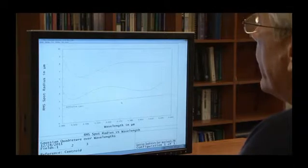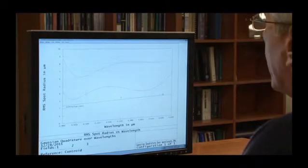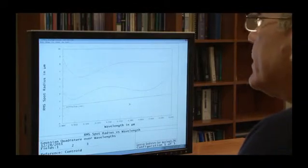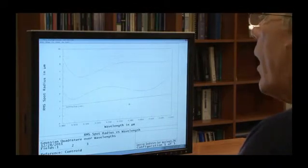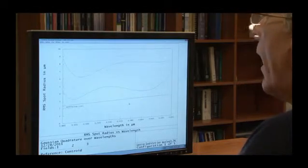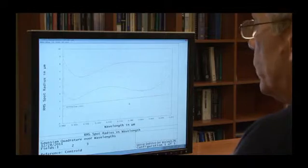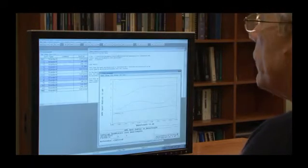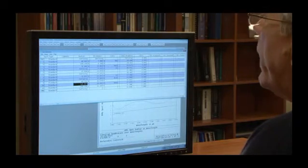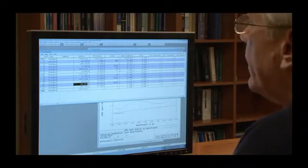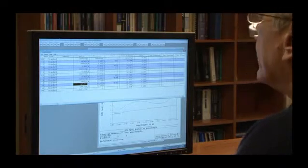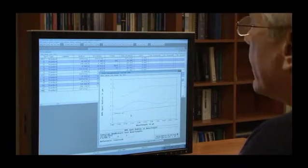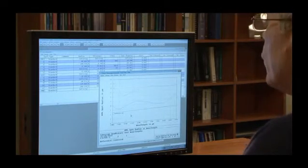So overall, the RMS spot size for this lens over the same wavelength range has improved simply because I changed how I chose my intermediate wavelengths and the weights that I applied to those intermediate wavelengths. And it really is as simple as that. I've got no extra tricks up my sleeve. I'm not making anything aspheric. I'm not adding any new glasses. I'm not doing anything other than just a better choice of the intermediate wavelengths and their weights. And that just gives me better performance right off the bat.